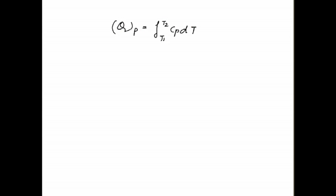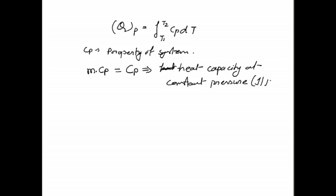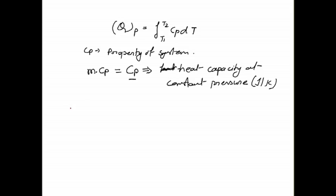This will be the equation of heat transfer at constant pressure in terms of specific heat at constant pressure: Q at constant pressure = integration from T1 to T2 of Cp dT. Here Cp is a property of the system. If we multiply this specific heat at constant pressure by the mass of the system, this equals the heat capacity at constant pressure, denoted by capital Cp, with unit Joules per Kelvin.